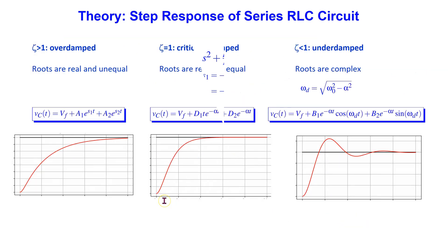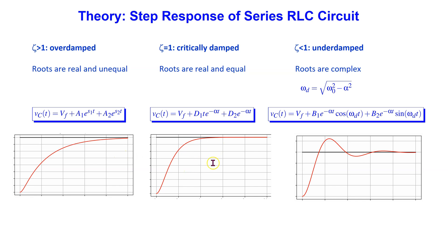The damping coefficient affects the way the voltage across the capacitor reaches its final or steady state value. When the circuit is overdamped, the voltage reaches its final value in a sluggish manner. When the circuit is critically damped, the voltage reaches its final value and the response is on the verge of oscillation.